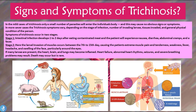What are the signs and symptoms of trichinosis? In mild cases, only a small number of parasites enter the body and this may cause no obvious signs or symptoms. In more severe cases, symptoms vary depending on the stage of infection, number of invading larvae, tissues invaded, and the general physical condition of the person. Stage one — the intestinal infection — develops one to two days after eating contaminated meat, and the patient experiences nausea, diarrhea, abdominal cramps, and fever.